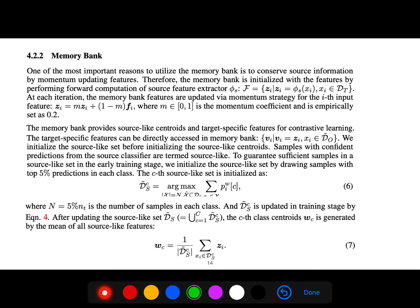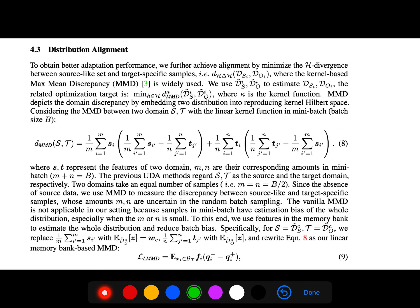To obtain better adaptation performance, we further achieve alignment by minimizing the MMD divergence between source-like set and target set. The MMD between the two domains (source and target) uses a linear kernel. This is the distance.